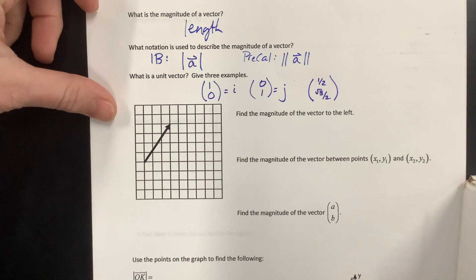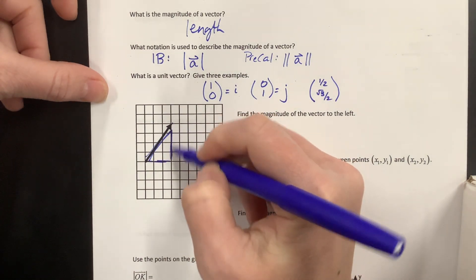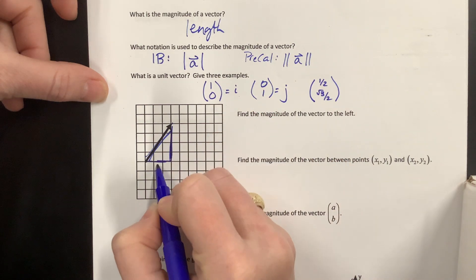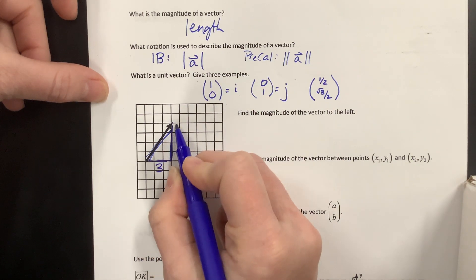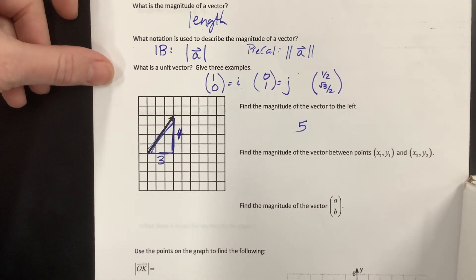So then they want us to find the magnitude of this vector. Well, if we want to know how long this is, I can come along here and draw a triangle. And this is 1, 2, 3 units, and this is 1, 2, 3, 4, and yes, I did that on purpose. The magnitude of that vector is 5.